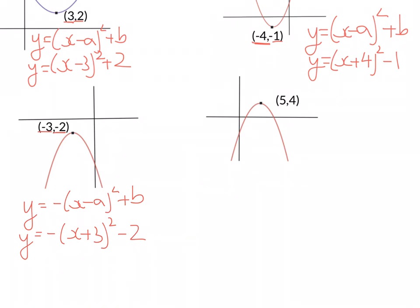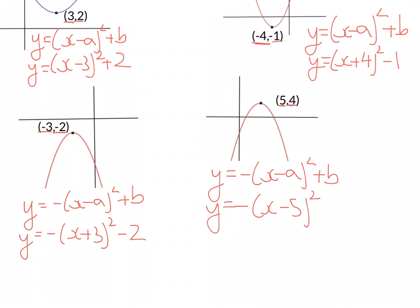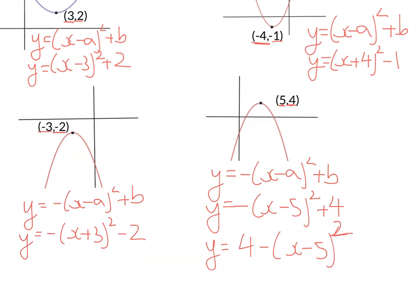The last one — again, it's a sad curve, so we have a negative outside our brackets. The x-coordinate goes inside the bracket and changes sign, so 5 becomes negative 5. The y-coordinate stays outside the bracket and does not change sign. So, you could write this last one as 4 - (x - 5)², or as y = -(x - 5)² + 4.